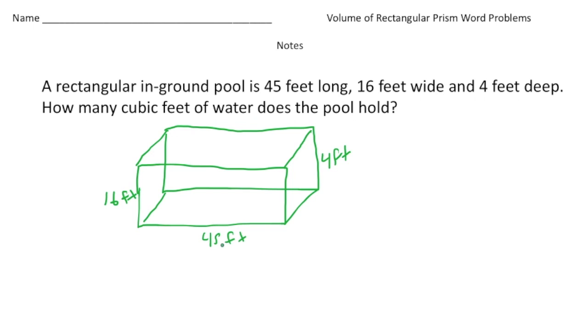All right, so now that we have the diagram, let's write down the formula. So we know to find the volume of the pool, volume is going to be length times width times height. And let's plug in the values.